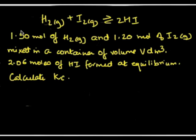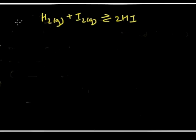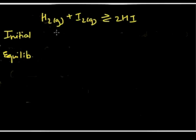The question asks us to calculate Kc, the equilibrium constant. Let's set out a table as we did before — initial moles and moles at equilibrium. Initially we had 1.5 moles of hydrogen gas and 1.2 moles of iodine gas, and there is no HI initially.